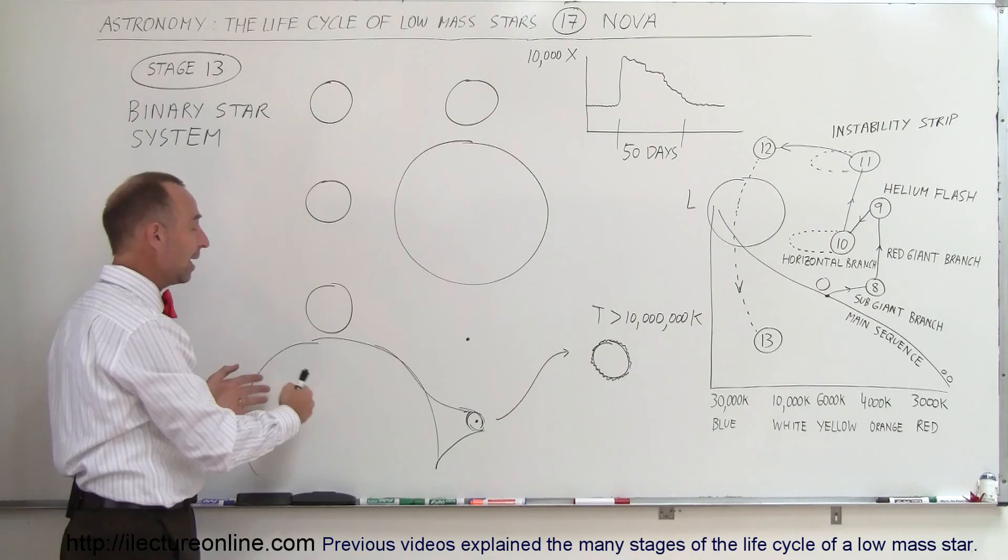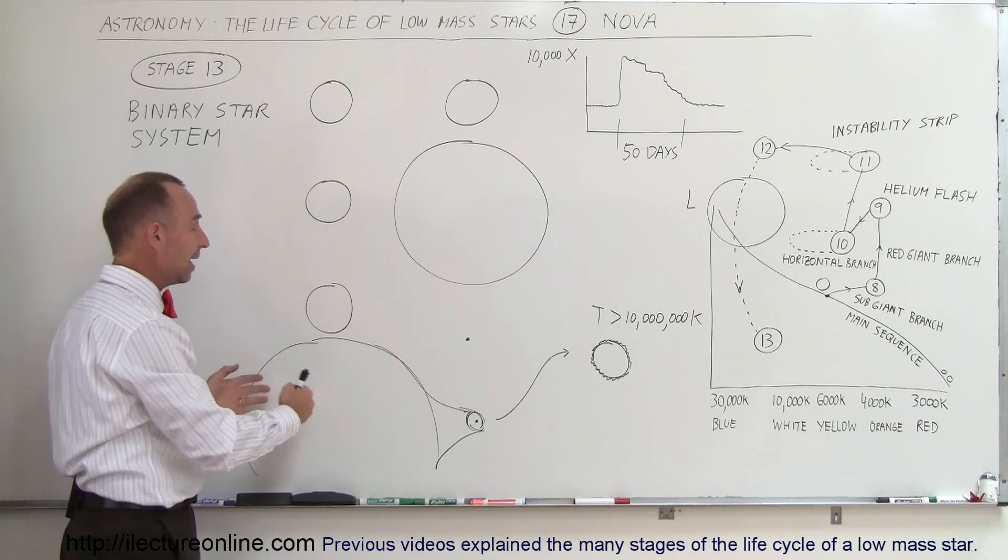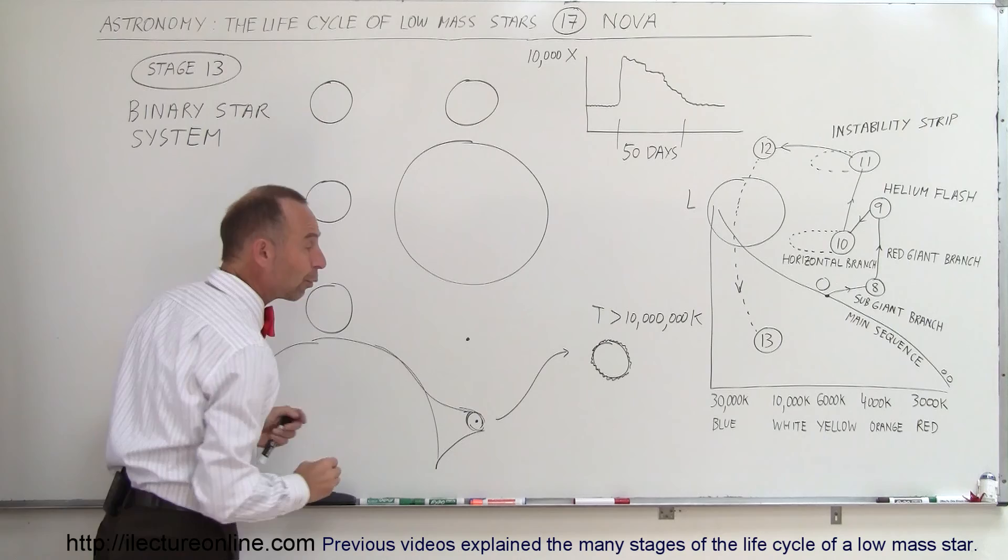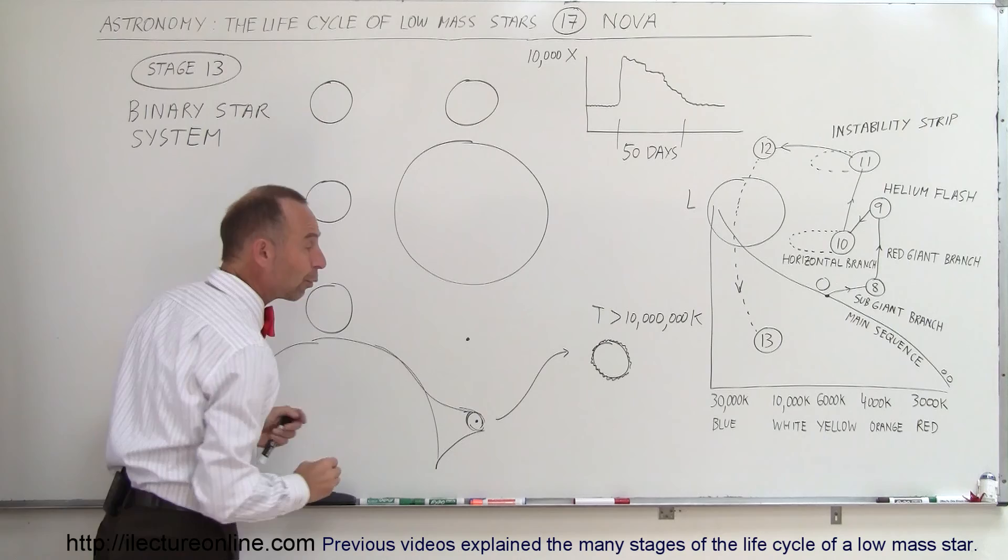But eventually it will also become a red giant. When it becomes a red giant, here's that small white dwarf very close to the red giant. If the red giant becomes larger in size, its outer layers become so close to that white dwarf. Remember, white dwarfs are very massive, very dense, and have very strong gravitational forces.